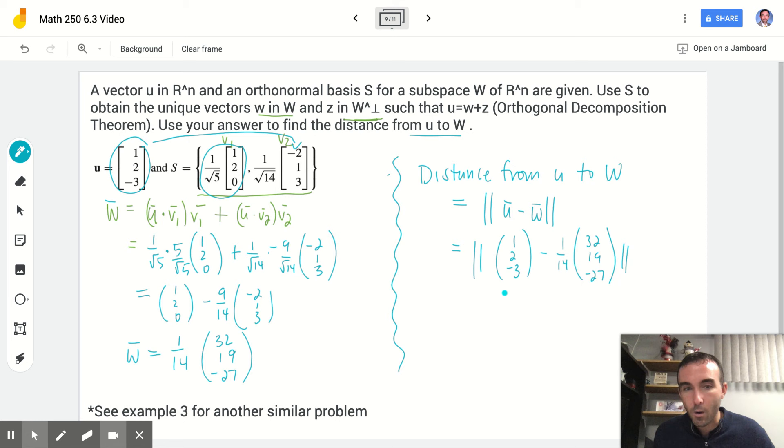So once we set that up, we then want to subtract entry by entry so I'm going to have 1 minus 32 over 14. That is going to be the same as 14 over 14, minus 32 over 14. That is negative 18 over 14. For the second one, I have 2 minus 19 over 14. And I can make 2, 28 over 14. And then that difference is just 9 over 14. And for the last one, I have negative 3 plus 27 over 14. So to get common denominators there, I'm going to make this negative 42 over 14 plus 27 over 14. And that's going to be negative 15 over 14.